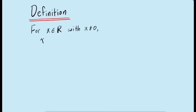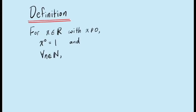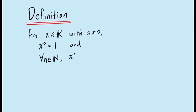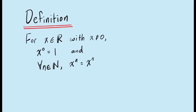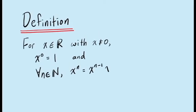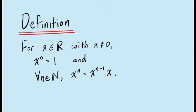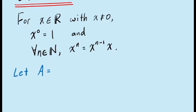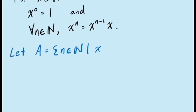we define x to the power 0 to be the number 1, and we then say that for any natural number n, the quantity x to the power n is defined to be x to the power n minus 1 multiplied by x. In this way, we can define all natural number exponents, because if we considered the set A to be the set of all natural numbers for which x to the power n were defined, we would see that 1 is in the set A.